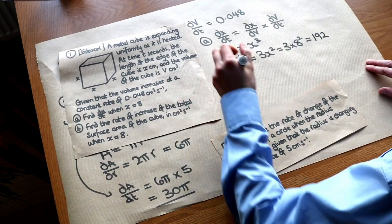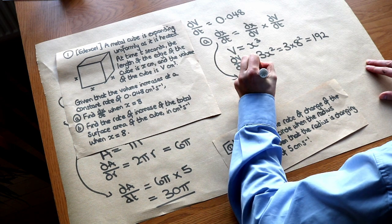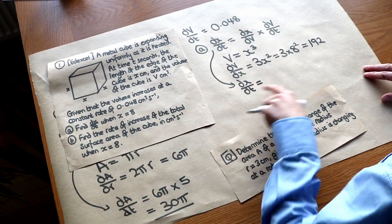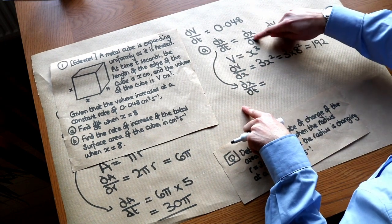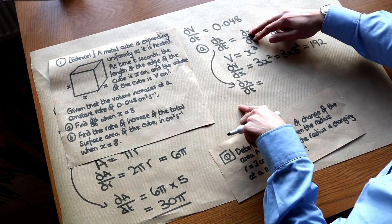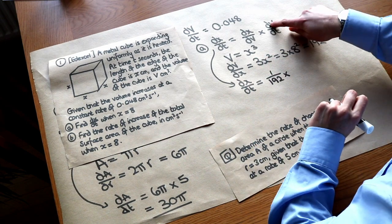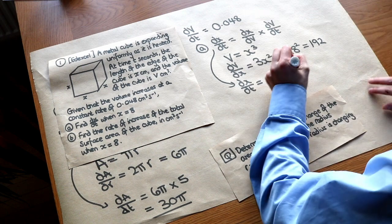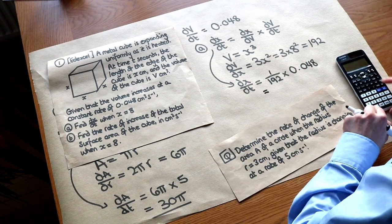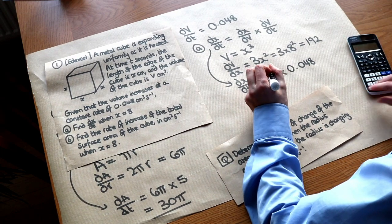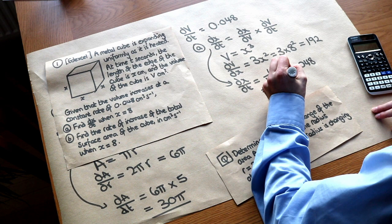Now we have everything we need. So dx over dt is equal to dx over dv. We've got dv over dx, so dx over dv is just 1 over that because it's been reciprocated. We times it by the dv over dt, which is 0.048. If we put that into our calculator, we get 1 over 4,000 or as a decimal, 0.00025.